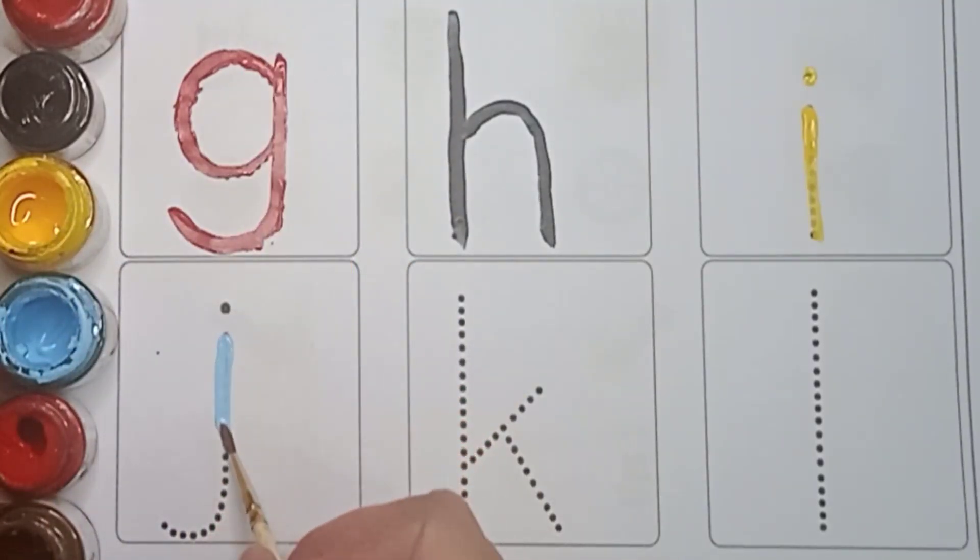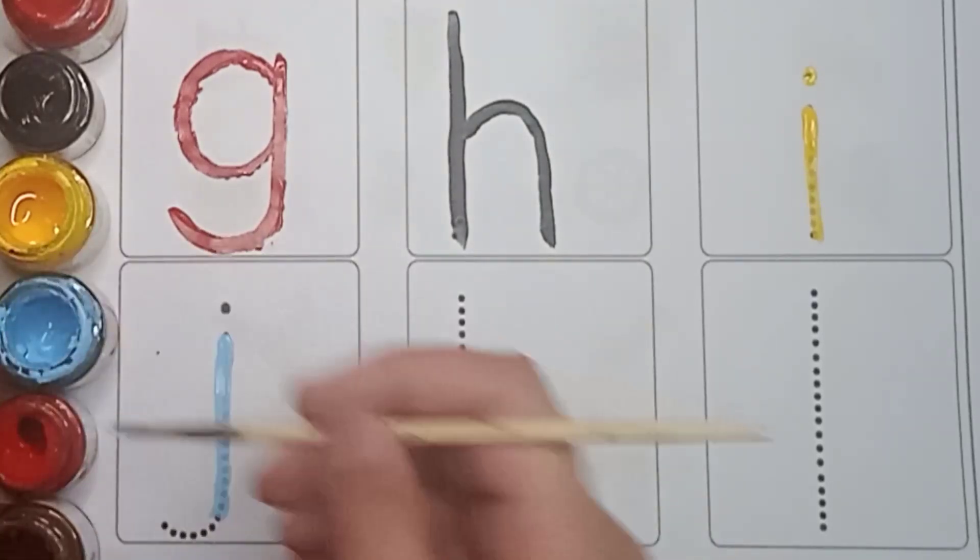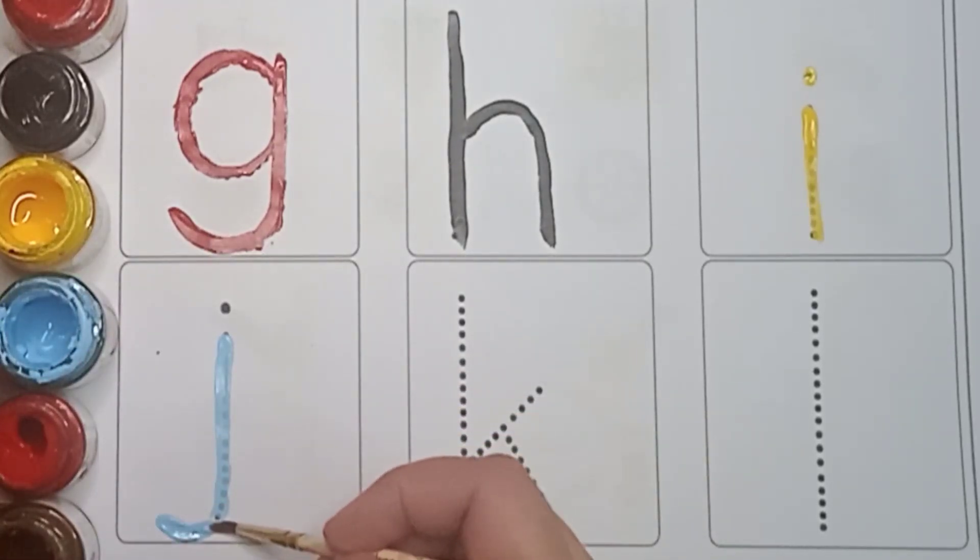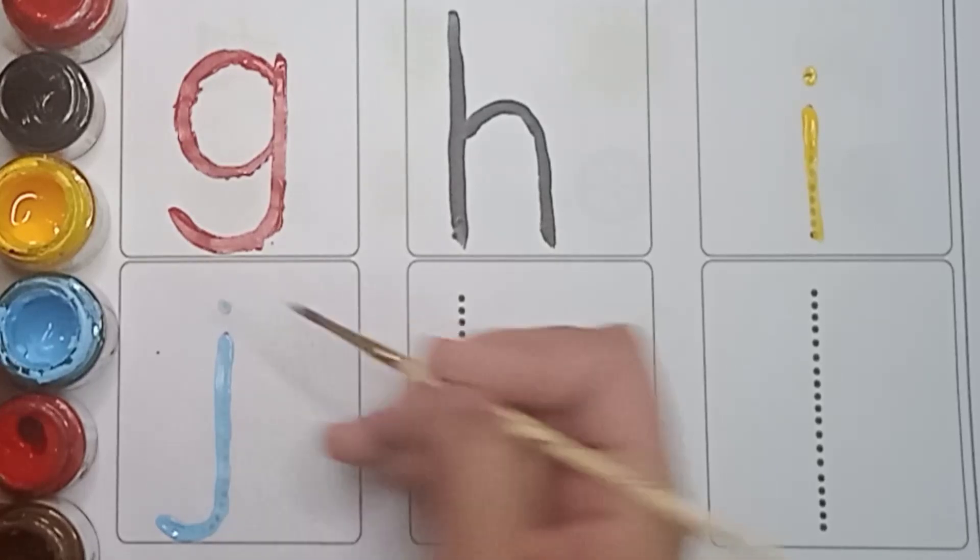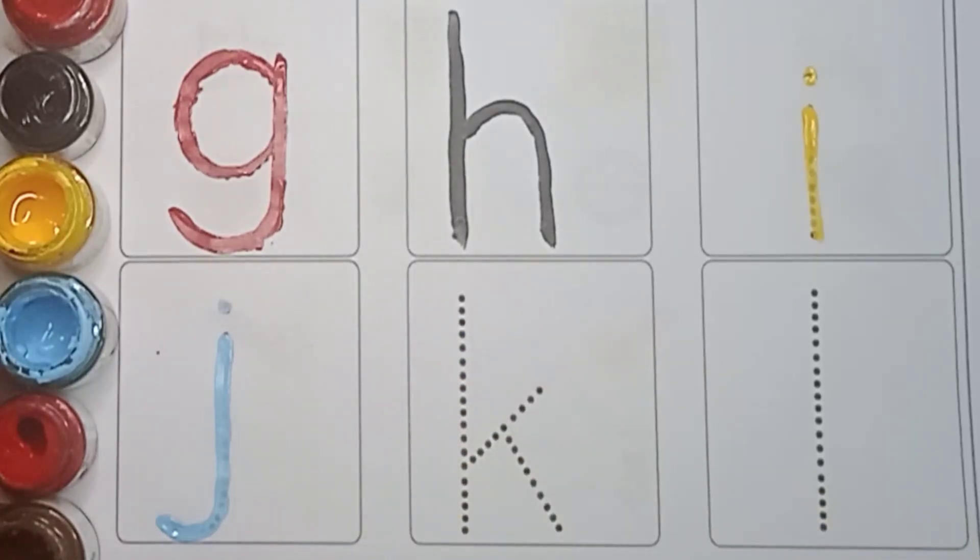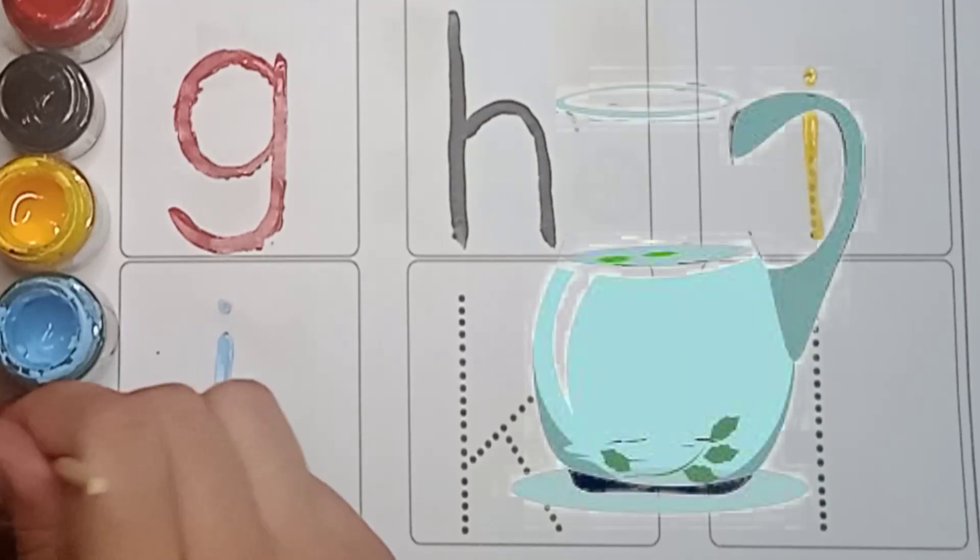Sky blue color J. First make standing line. And small curve like this. And small dot on the top. It's J. It's J. J is for Jug.